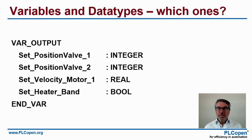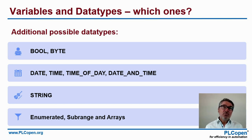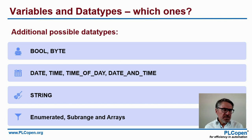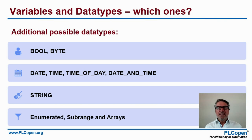These are all the variables and their data types, but there are more: bool, byte, date, time, time of day — values we need to know when something happens — and string for text, for instance to send a message to your HMI, your human machine interface. You also have enumerated data types, sub-range types, and arrays.